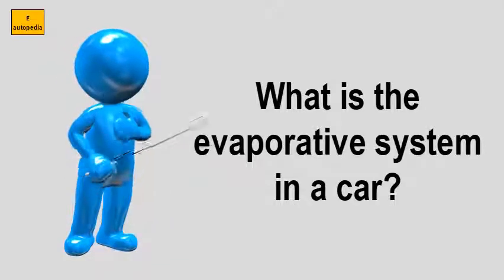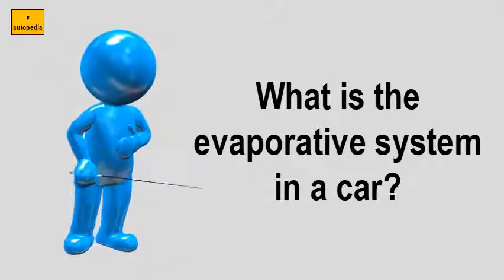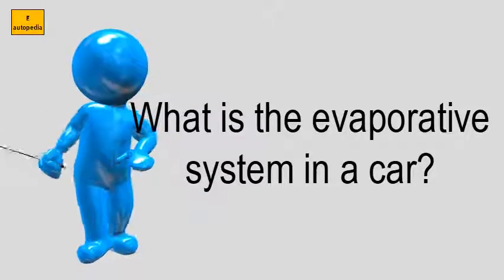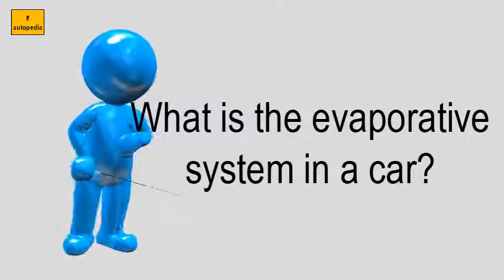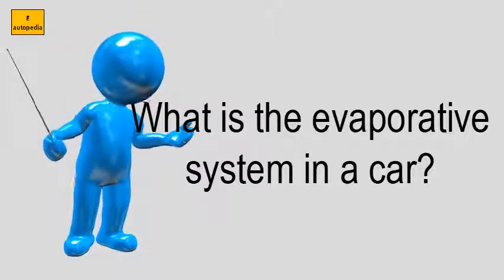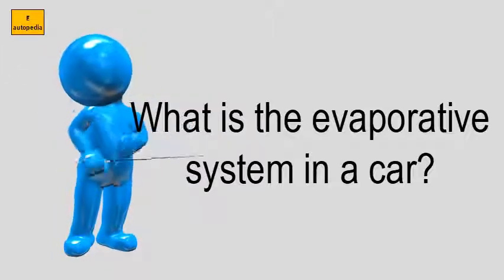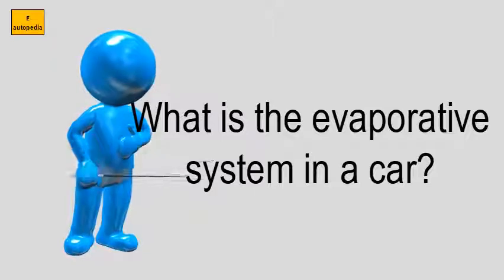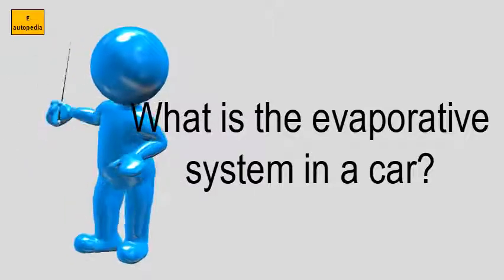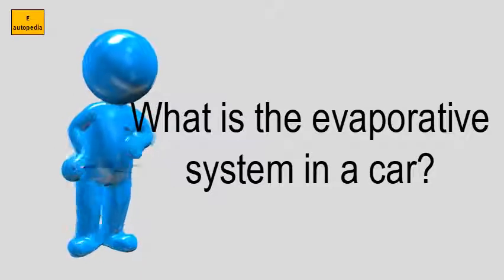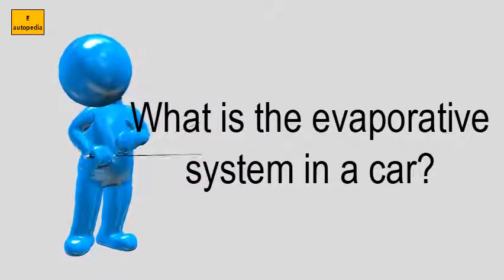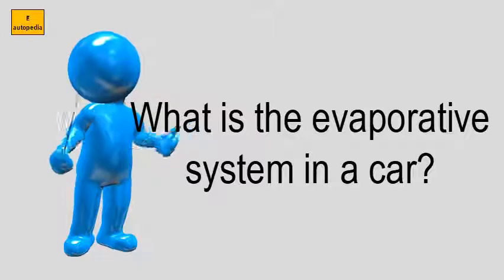What is the evaporative system in a car? The evaporative emission control system is used to prevent gasoline vapors from escaping into the atmosphere from the fuel tank and fuel system. The EVAP system usually requires no maintenance, but faults can turn on the check engine light and prevent a vehicle from passing an OBD2 plug-in emissions test.